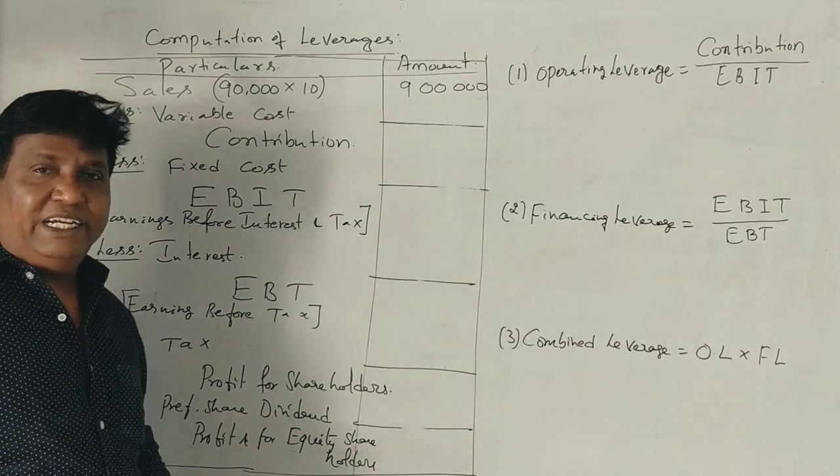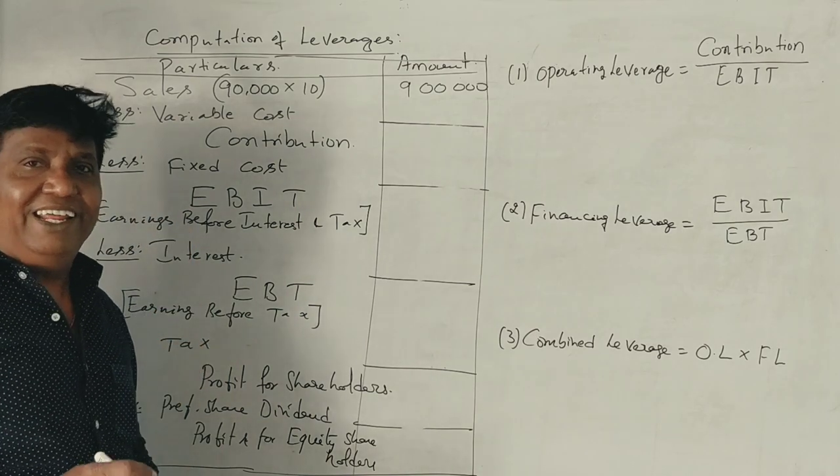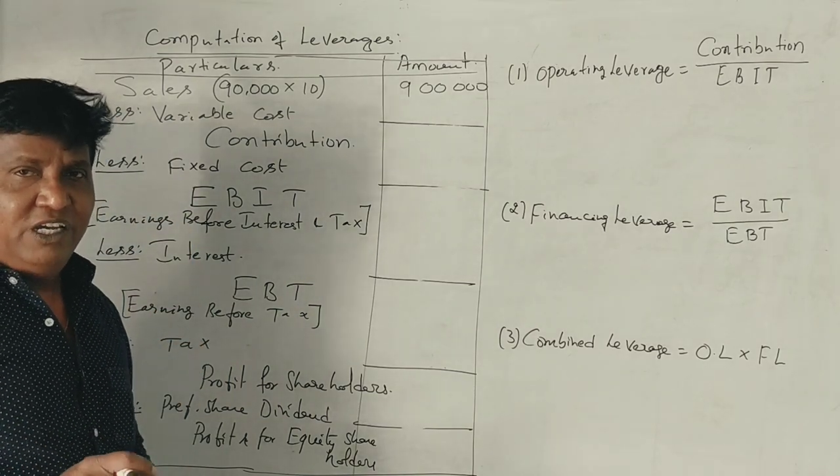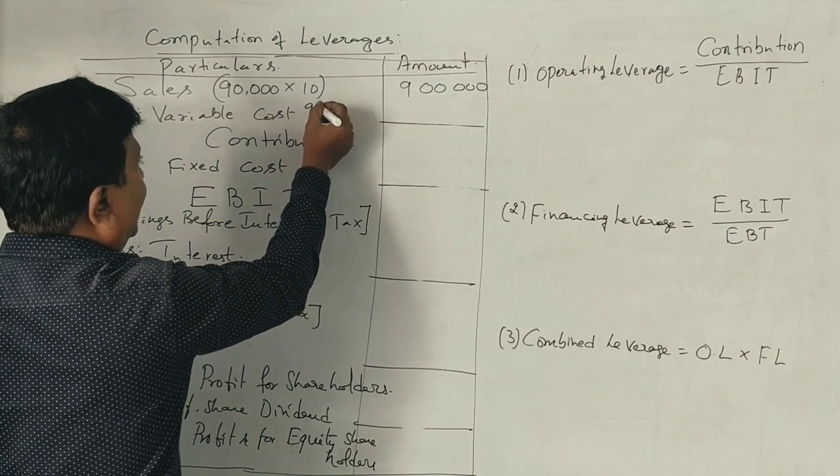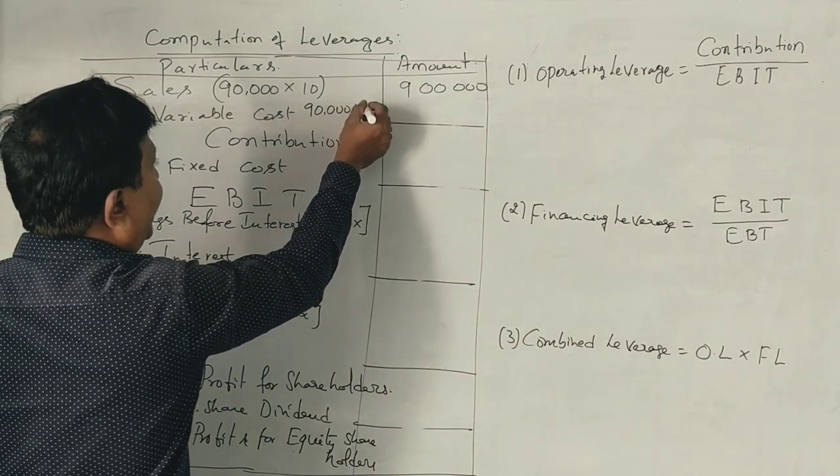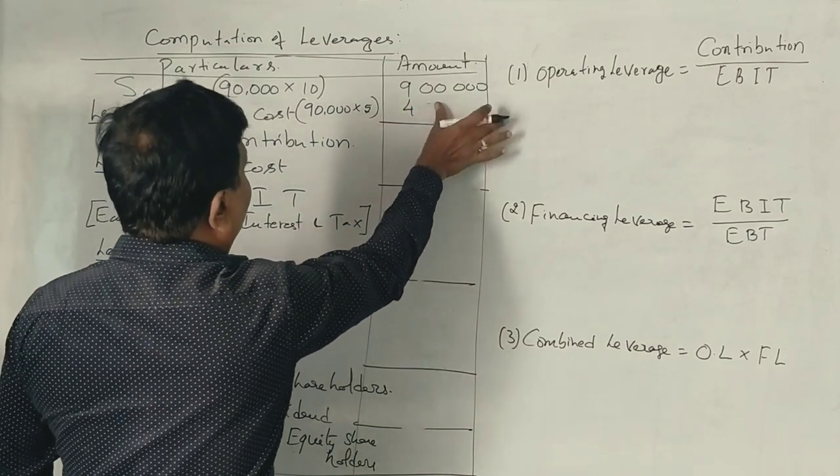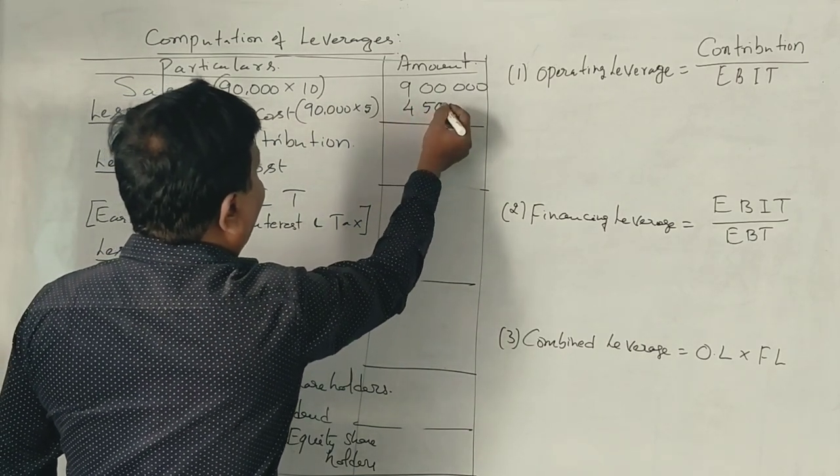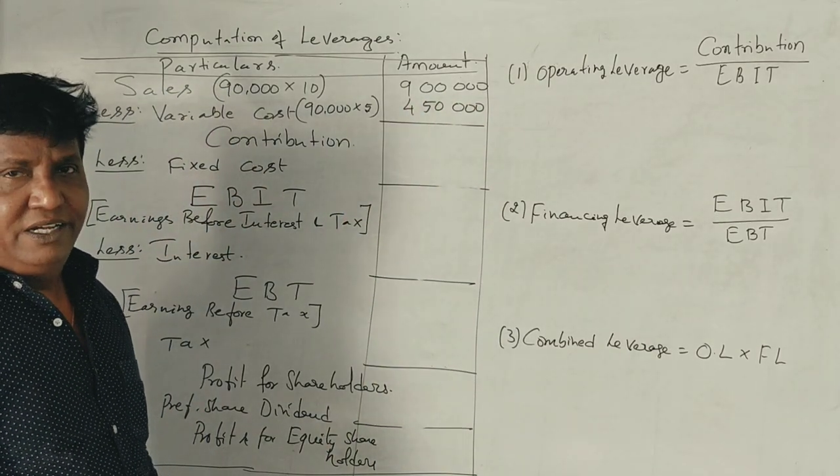Next, we deduct variable cost. When producing and selling 90,000 units at variable cost of Rs. 5 per unit, we get 90,000 × 5 = Rs. 4,50,000 as the total variable cost.